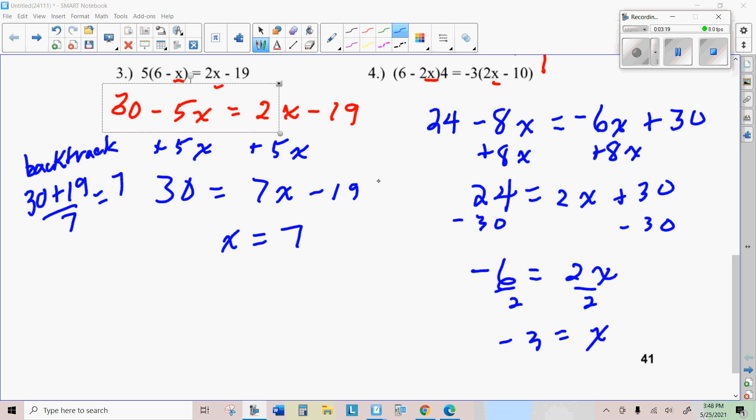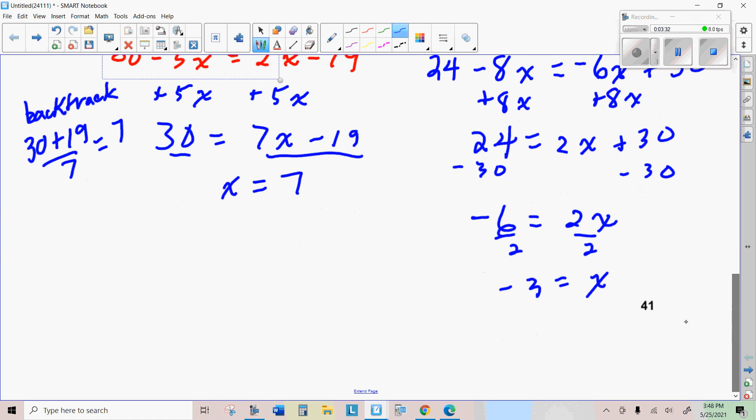All right, here's my work. The one on the left, I just balanced to get rid of the X from one side and got this equation. And then I backtracked and found an answer with 7. On this one, I actually balanced it all the way to the answer. So I just thought you could see both ways.